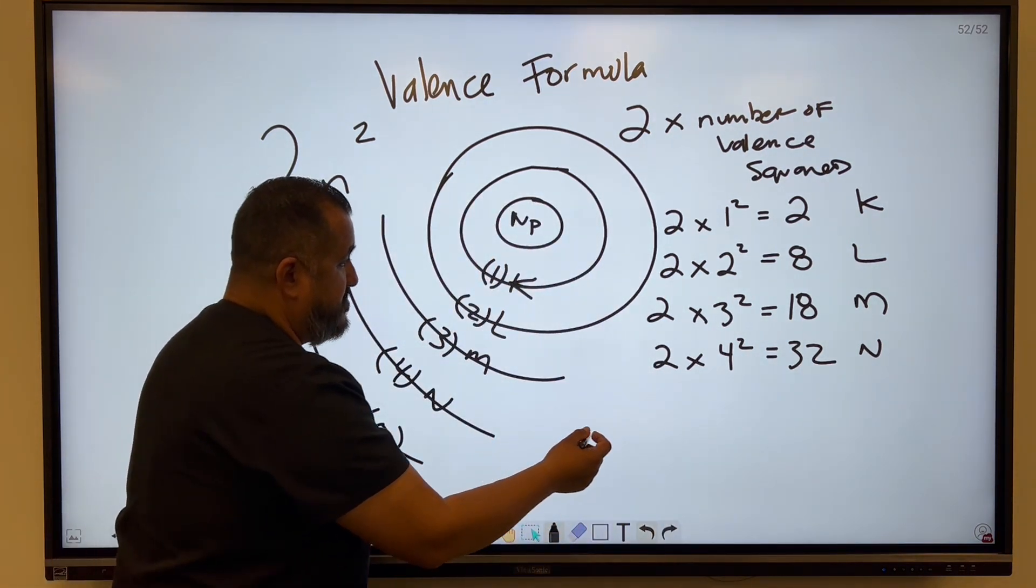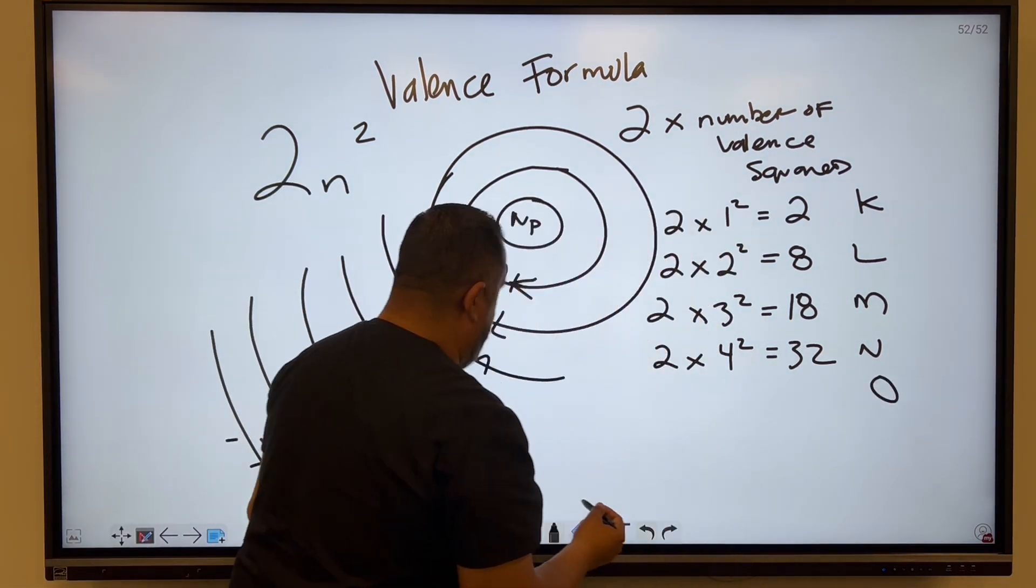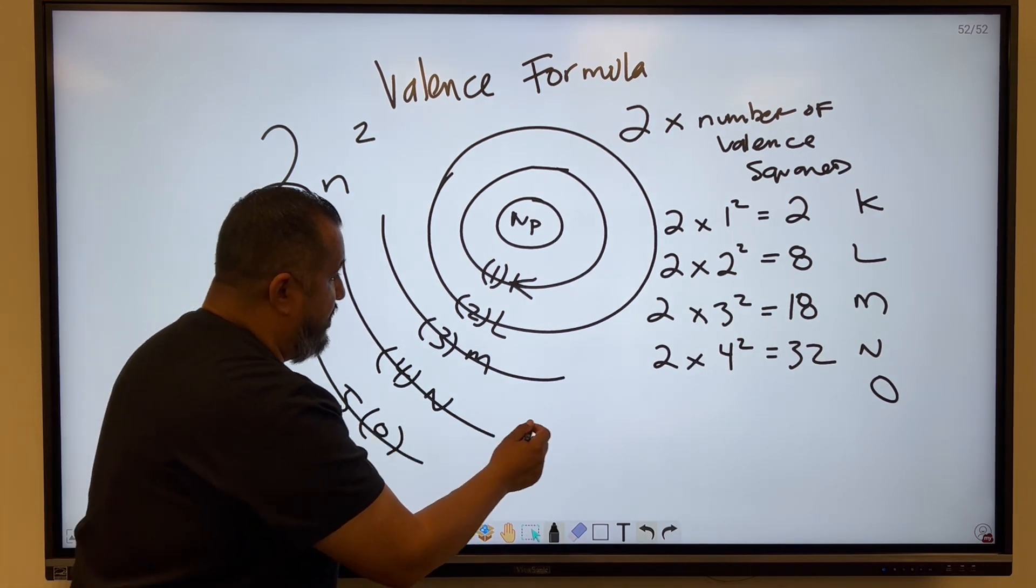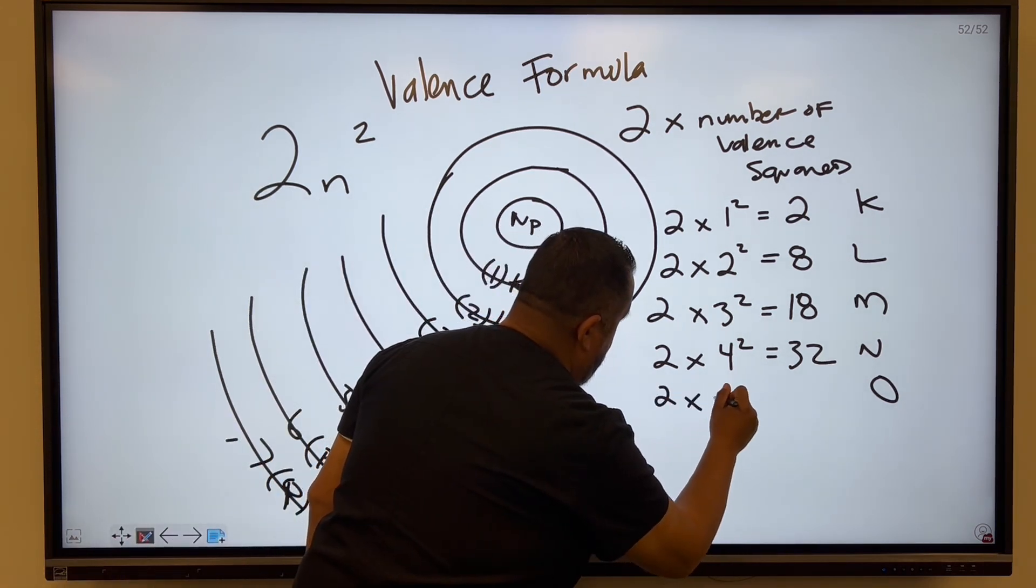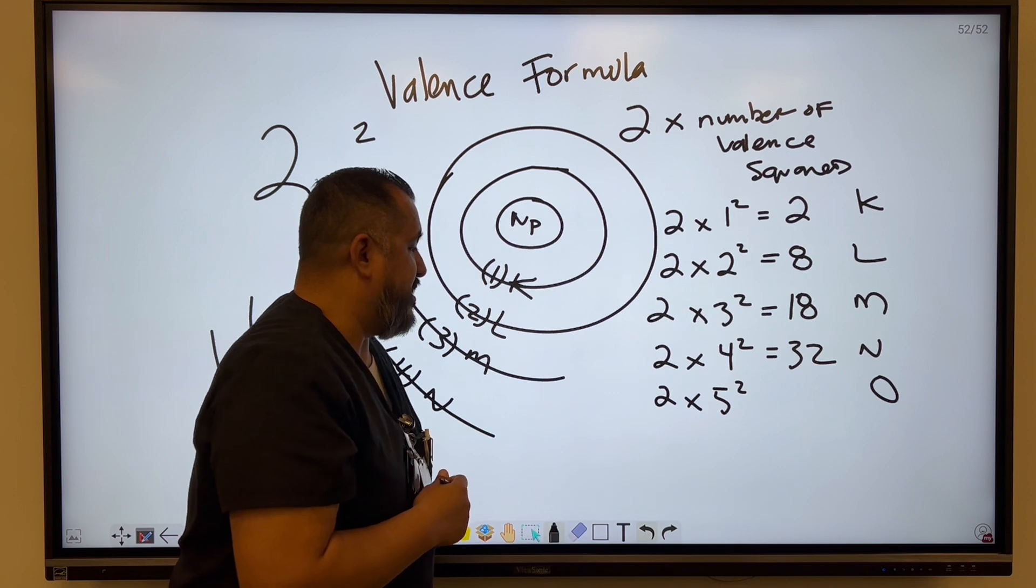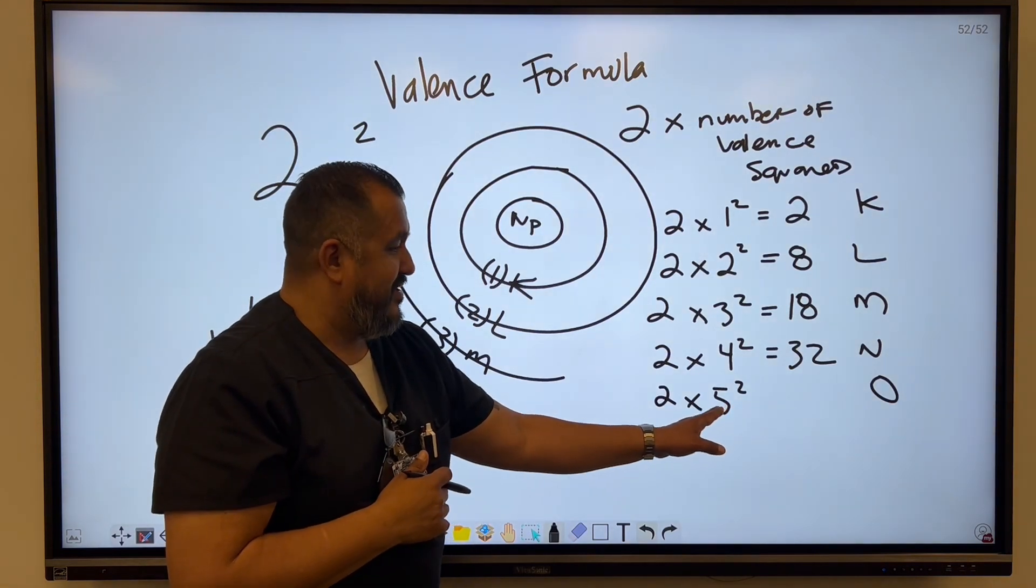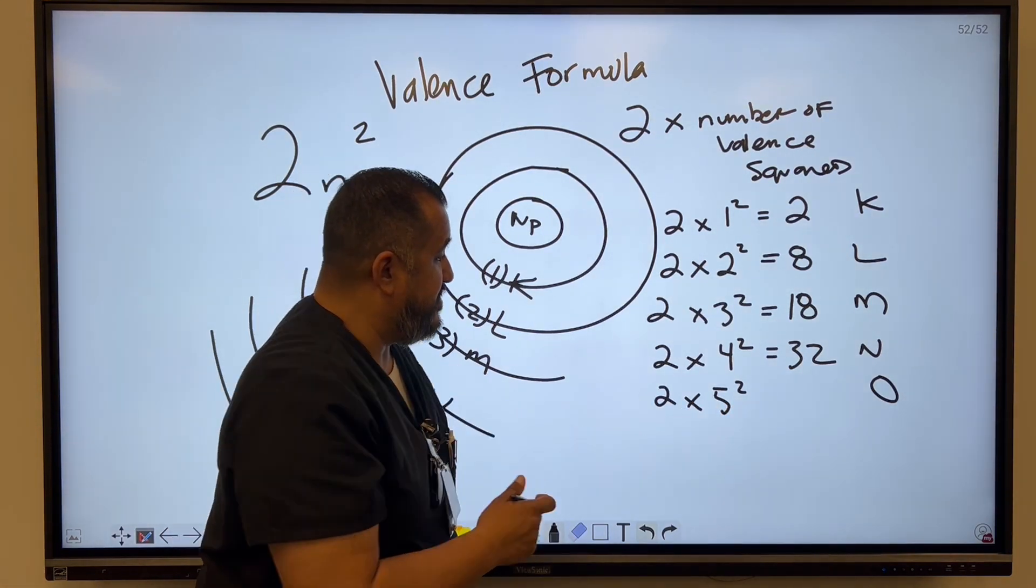And then we got O. Put O right there. So 2 times 5 squared. So 5 times 5 is 25. And then 25 times 2 is 50.